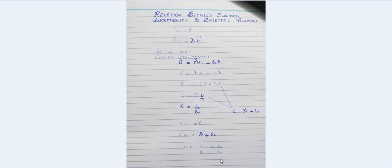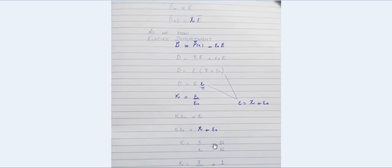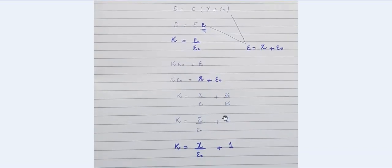We then shift ε₀ to the other side, and you can see that the ε₀ terms cancel, leaving k - 1 = χ/ε₀, or equivalently χ = ε₀(k - 1). This gives us the relationship between dielectric constant k and electric susceptibility χ. You can also express this as k in terms of χ, so both forms of the relation are derived.